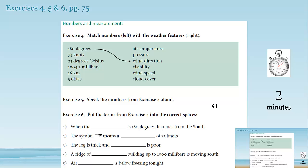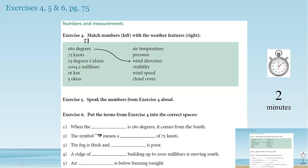So now exercises 4, 5, and 6 on page 75 — we're going to do all together. Exercise 4 shouldn't be a problem — match these numbers on the left with the weather features on the right. As you're matching these up, say them out loud so you get the pronunciation right. I will say them for you when we go through the answers. Then exercise 6 — you're going to put these weather feature terms into these gaps. Two minutes, let's do this.